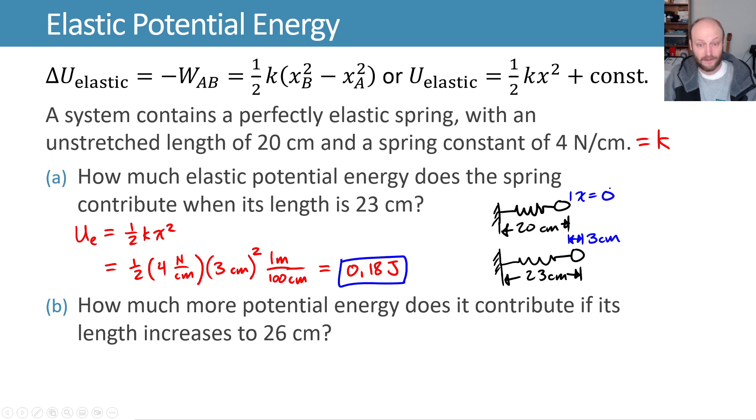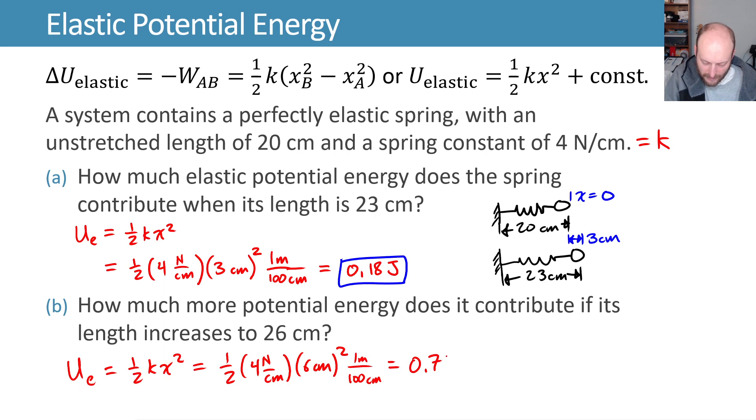How much more potential energy does it contribute if its length is increased to 26 cm? Let's do another calculation. One-half kx squared, where now my new x is 6 cm. Do the same unit conversion as before, and we get 0.72 joules. That's its potential energy when it's stretched to 6 cm.